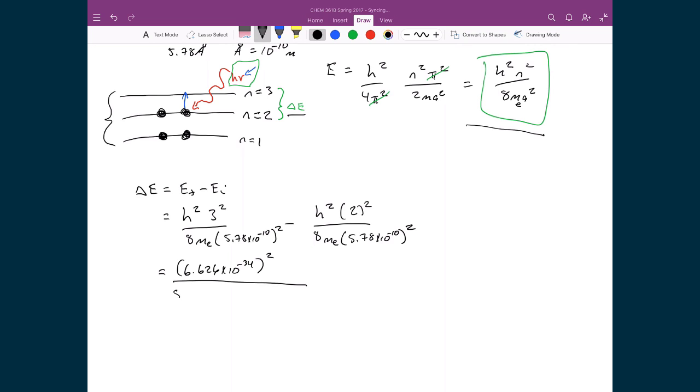I'm going to divide that by 8 times the mass of the electron, 1.109 times 10 to the minus 31. I'm going to multiply that by the width of the box, 5.78 times 10 to the minus 10 squared. And with that, I'm just going to multiply that by 9 minus 4.